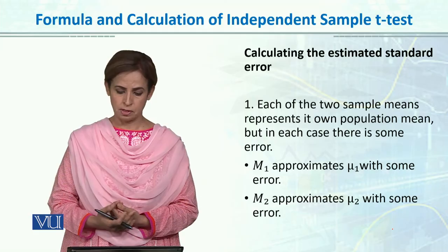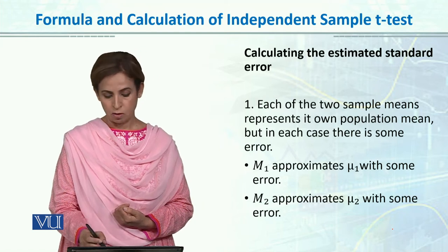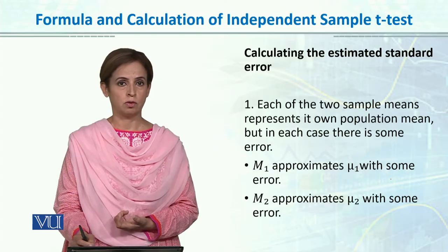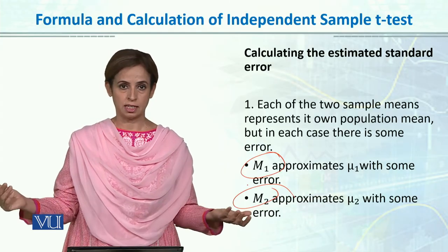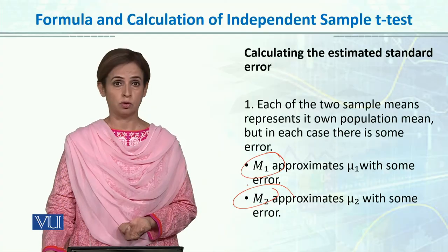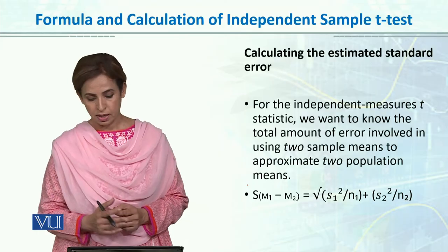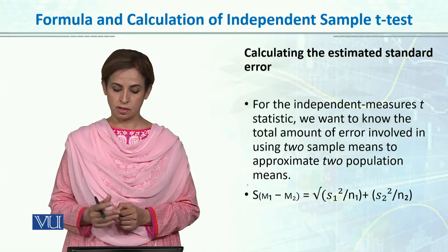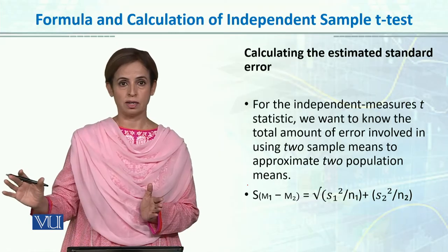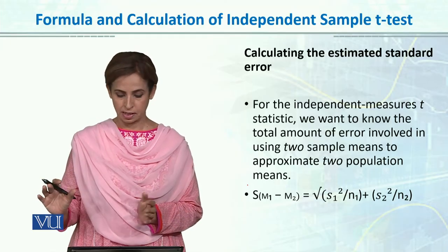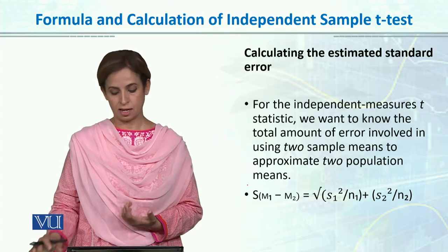Each of the two sample means represents its own population mean, but in each case there is some error. If mean 1 approximates population 1 and mean 2 approximates population 2, for instance girls and boys, we are estimating the larger population from the sample, so there will definitely be error in both. For the independent sample t-statistic, if we want to know the total amount of error involved in using two sample means, we need to calculate the total amount by combining both and approximating total error for the t-test.